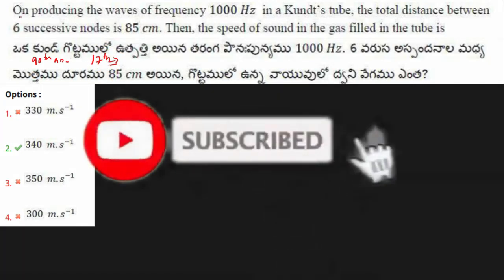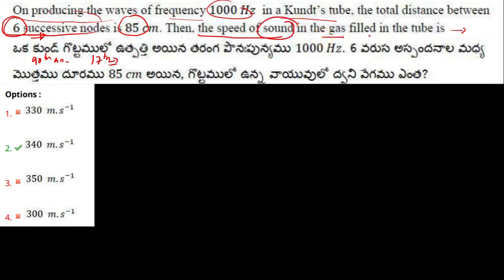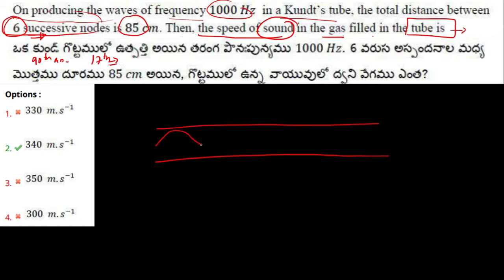In this question it is said that on producing waves of a frequency of 1000 Hz in a Kundt's tube, the total distance between six successive nodes is 85 cm. We have to find the speed of sound in the gas filled in that Kundt's tube. Let us first consider a Kundt's tube — the waves are in this form.